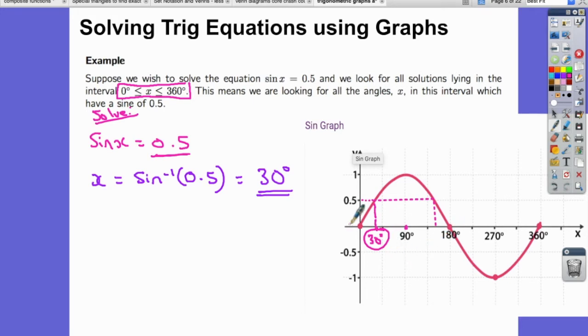So hopefully you could use the idea of symmetry to actually find what this next answer would be. Now, the way that I usually do it is I think, well, this difference here going from 0 to 30 is 30, so it must match on this side. So I hope you agree that my next answer here is actually going to be 180 degrees subtract 30 degrees, which is 150 degrees. That's my second answer.